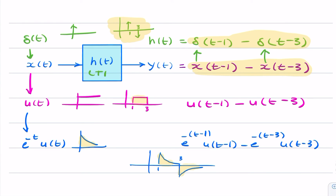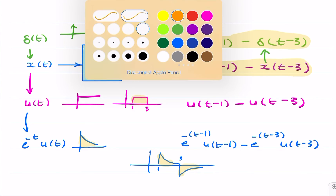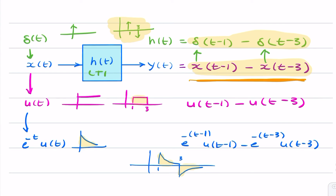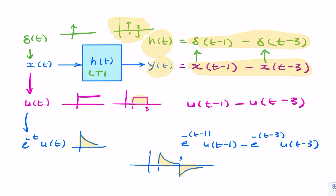So it's possible to use an expression that relates the output to the input to find not only the impulse response, but also the output for different inputs. All you need to do is replace x of t with your different input functions, and then you have the ability to express it mathematically, like we did here, or to sketch it, as we did here and here. Thank you, guys.